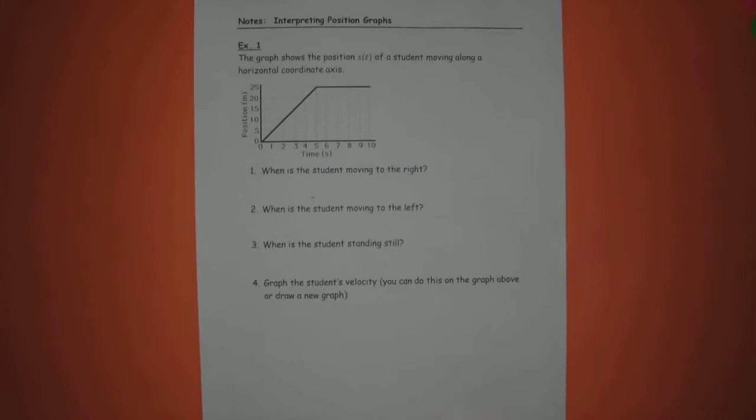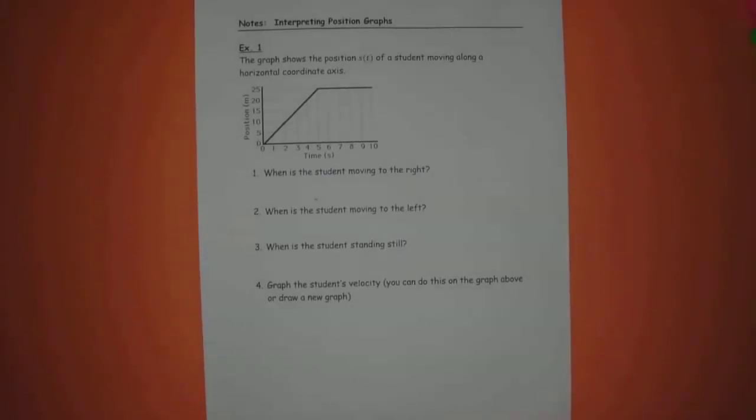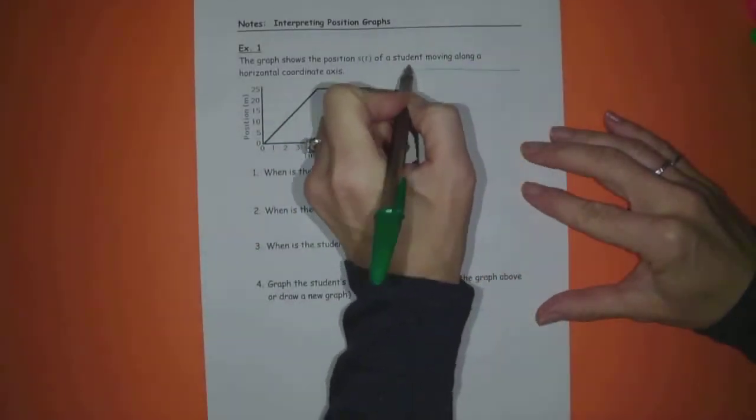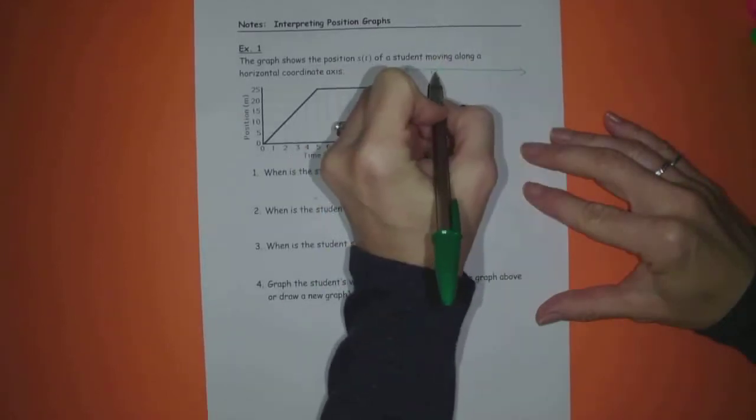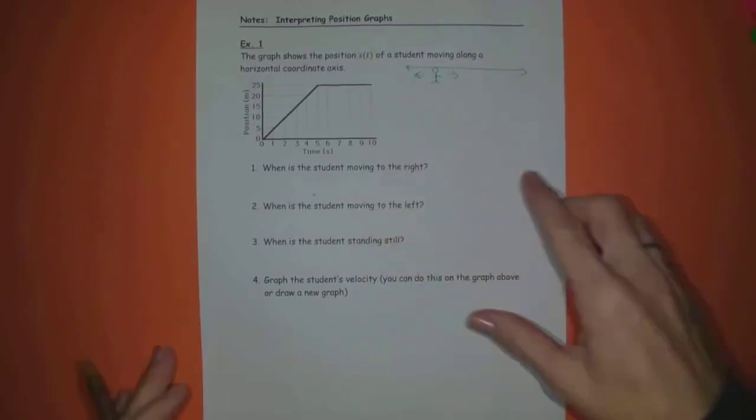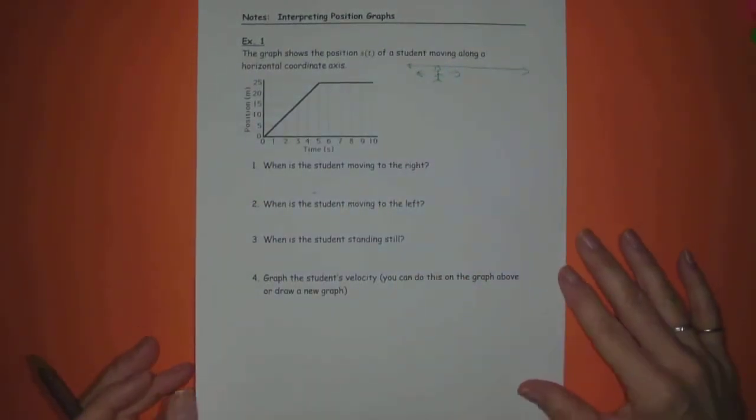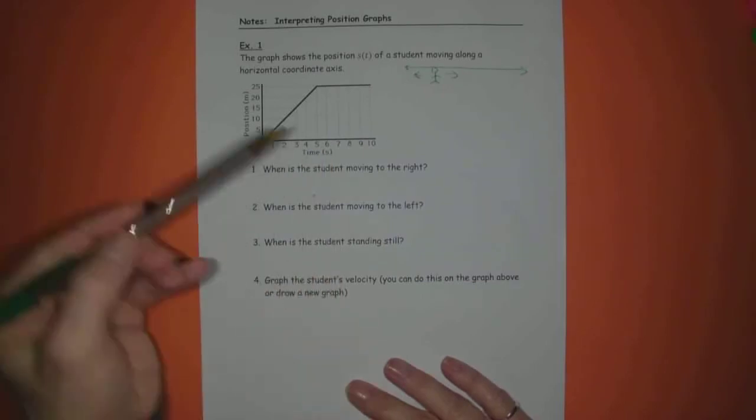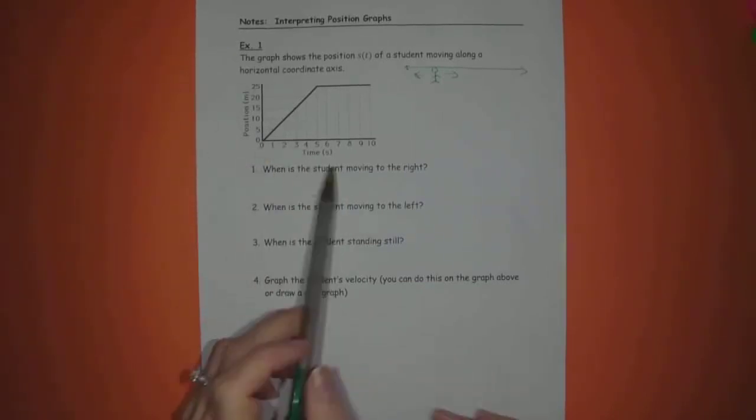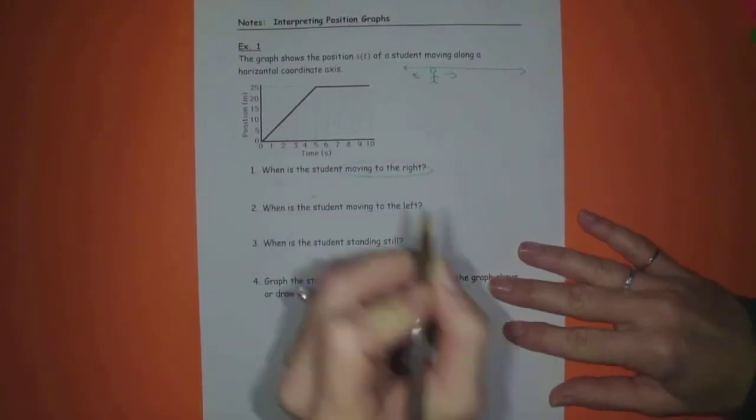Example 1. The graph shows the position, S(t), of a student moving along a horizontal coordinate axis. This graph just represents positions of a student moving right and left along a horizontal line. You can see that time is measured in seconds, and the student's position here is measured in meters. Question 1 says, when is the student moving to the right?